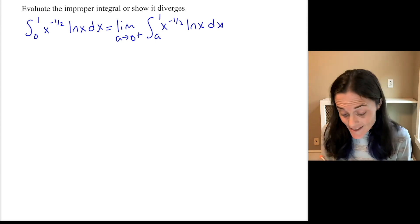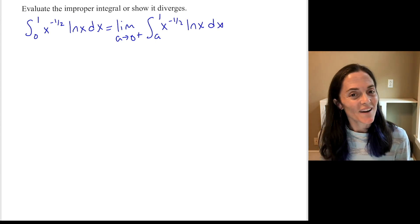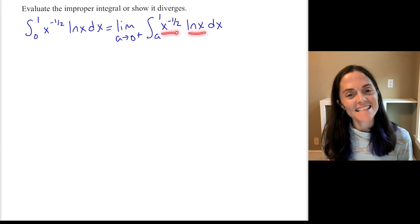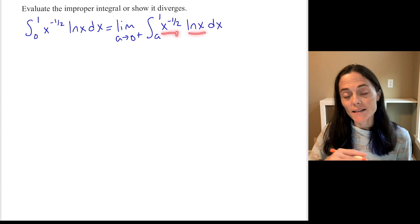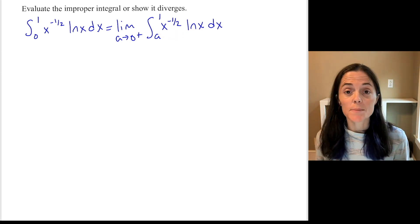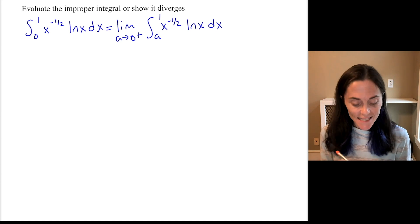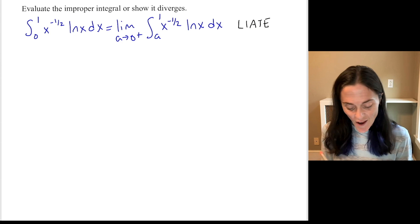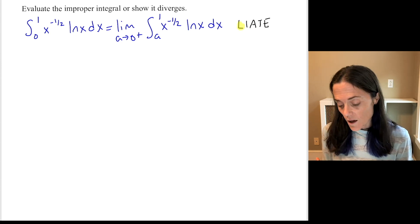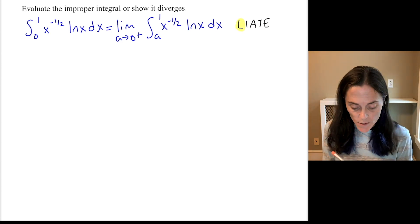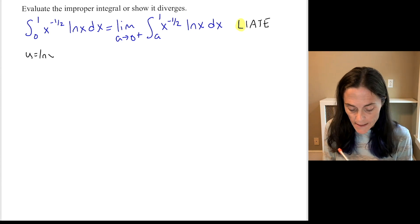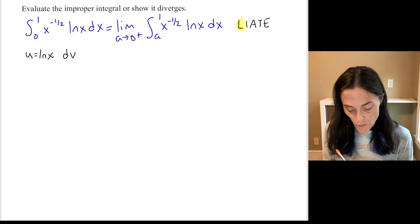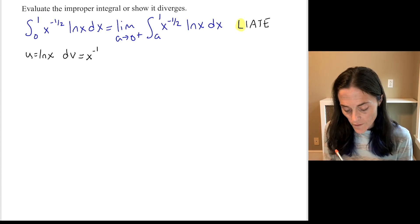The first thing we need to ask ourselves is how do we integrate this function? We see a product natural log times x to the minus 1 half, and it's not sort of a straightforward substitution. And so this suggests integration by parts. If we follow our acronym, LIATE, our very first option, the log, we have. So u will be ln x, and dv will be everything else, including the dx, which will be x to the minus 1 half dx.